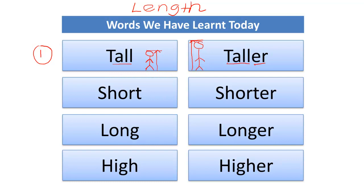Let me give names to these two men — I'll call them John and Tim. I will say: Tim is taller. Or I can say: John is tall. So we use 'tall' for one person and 'taller' when comparing to someone else.